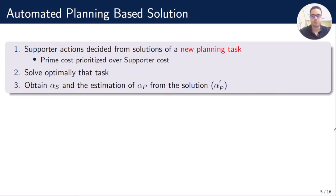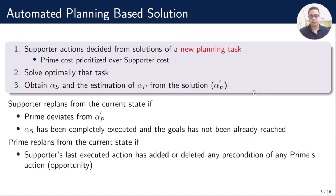Our solution has the same structure. Firstly, Supporter computes a new planning task in which Prime's cost is prioritized over Supporter's cost. Secondly, we solve that task optimally, and from that plan we obtain the sequence of Supporter actions and the estimation of the sequence of Prime's actions. Supporter will replan from the current state if Prime deviates from the estimated Prime actions, or if the prior sequence of Supporter actions has been completely executed and the goal has not yet been reached. Prime always executes the first action of its optimal plan, but it doesn't always recompute an optimal plan — it can reuse previous optimal plans.